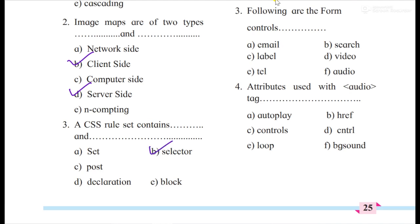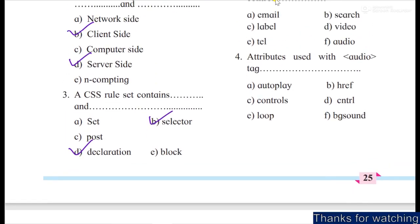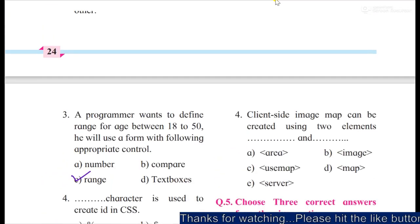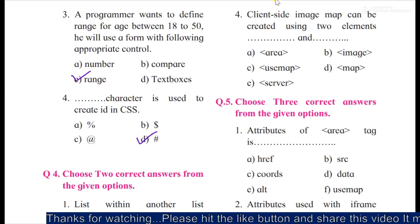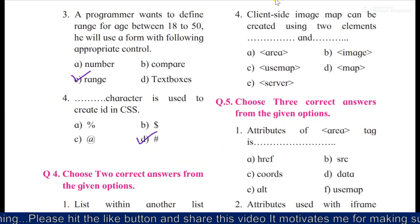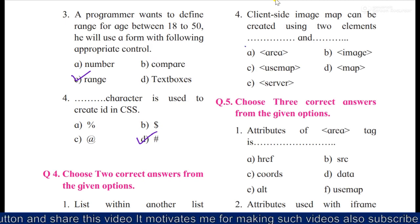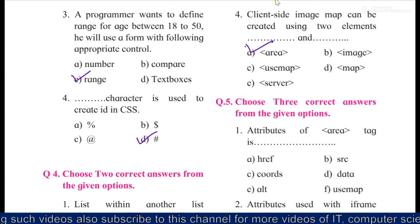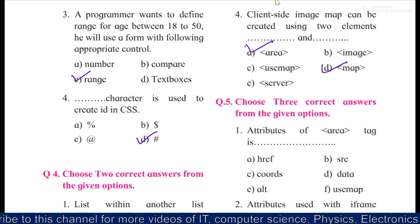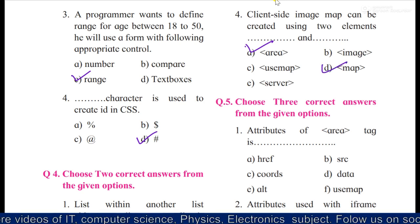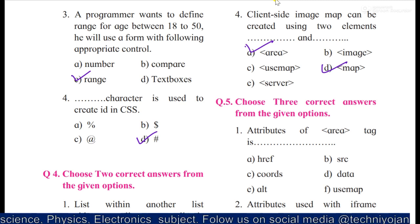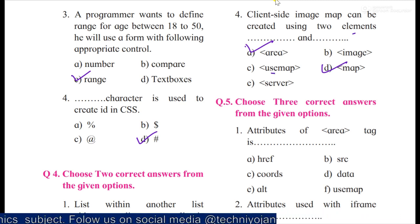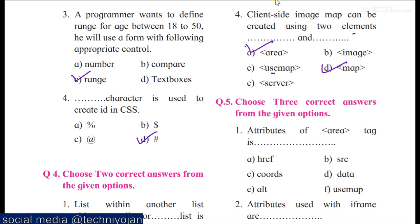A CSS rule set contains dash and dash. A selector is there, ID selector, and then declaration. Then we'll move forward to this. Client side image map can be created using two elements, dash and dash. Yes, so you can say area and map. It is client side image map, not an image. They are saying elements, so this is an attribute use map. So you can say area and map.